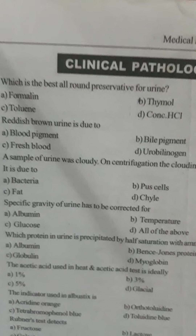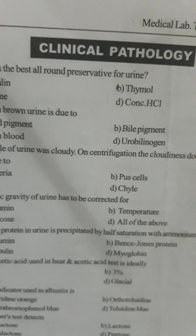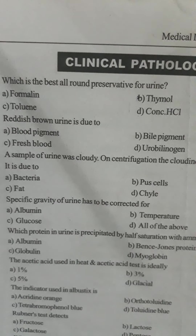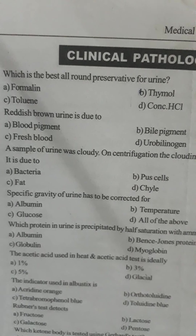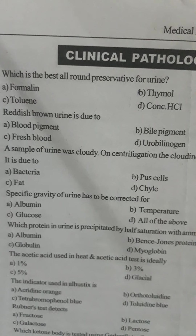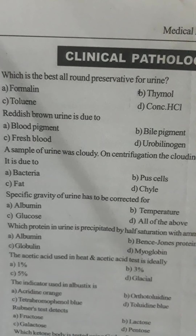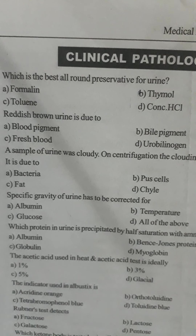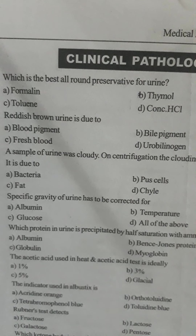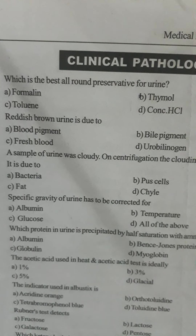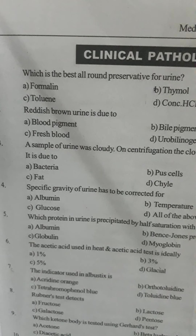Question number three: a sample of urine was cloudy; on centrifugation the cloudiness does not disappear. This is due to — Option A: bacteria, Option B: pus cells, Option C: fat, Option D: casts. The answer is Option A, bacteria. In the case of bacteria present in urine, the cloudiness is not removed by centrifugation.